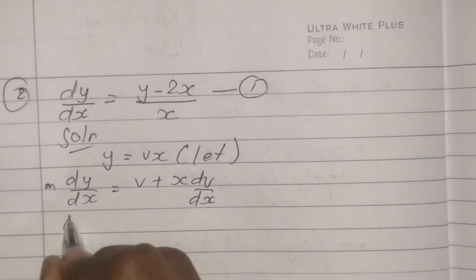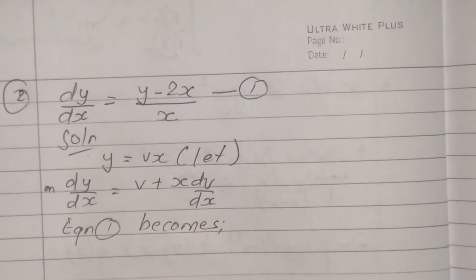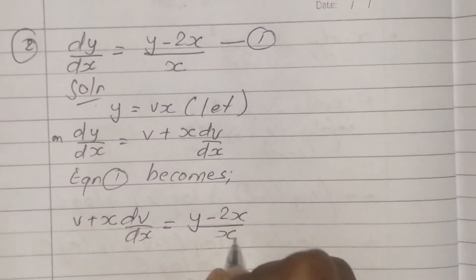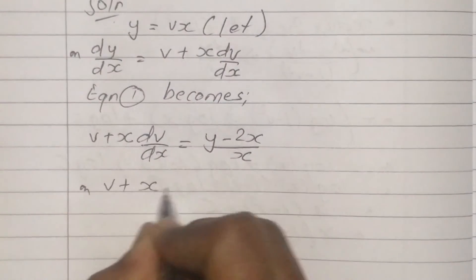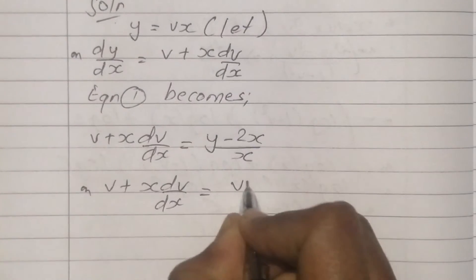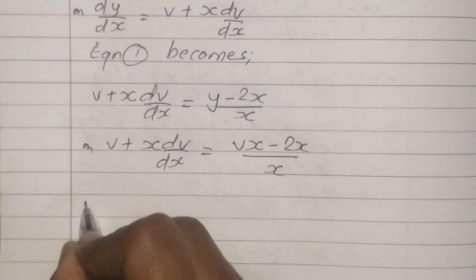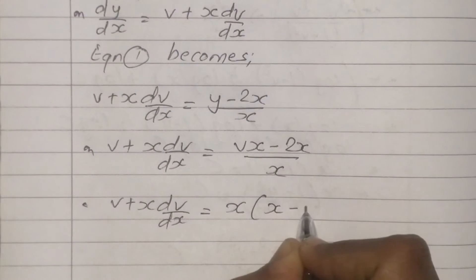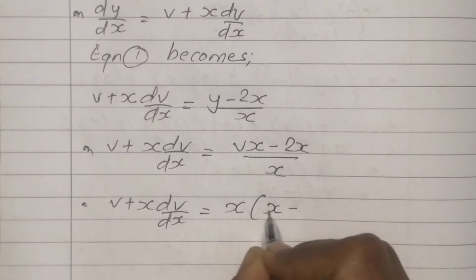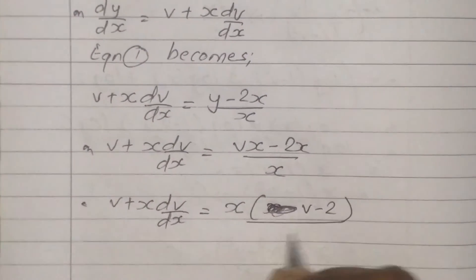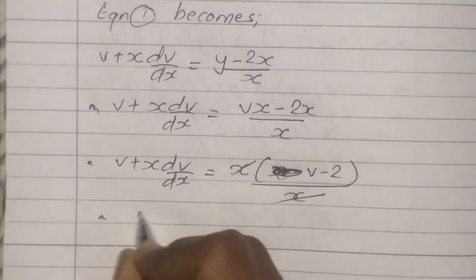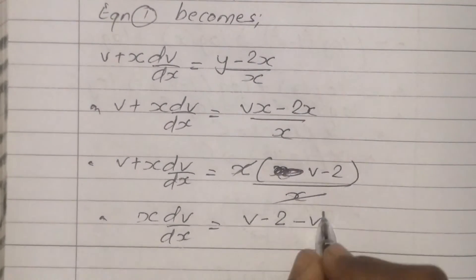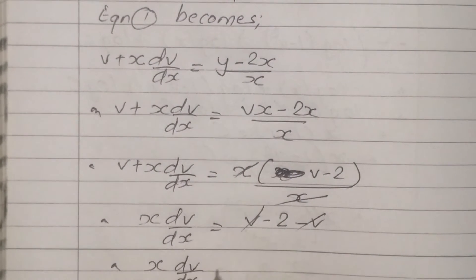Let y = vx. Equation 1 becomes: substituting, dv/dx gives us dy/dx equals (vx minus 2x) upon x. Simplifying: x dv/dx is equal to v minus 2 minus v, which reduces to x dv/dx equals minus 2.